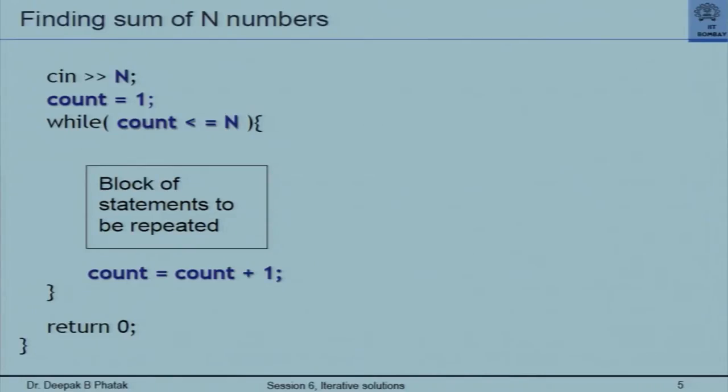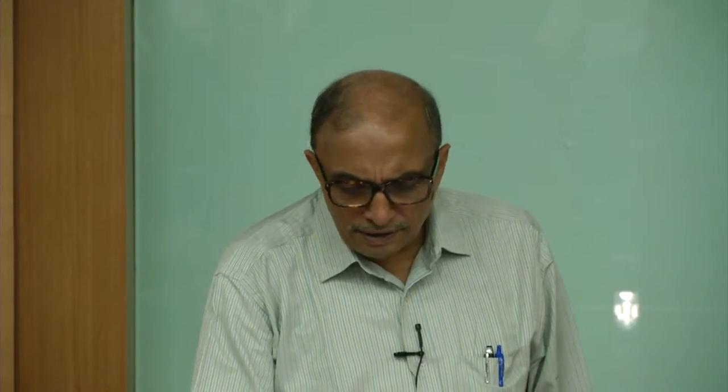This is the standard iterative approach: if you are given N numbers and want to find their sum, you illustrate that you need a block of statements to execute a fixed number of times, and the counting mechanism is explained briefly. I illustrate that by some kind of flowchart. Note that while is introduced before this, so people are aware of while. The condition under while is count less than or equal to N, with initialization count equal to 1 and count equals count plus 1 after executing the block.